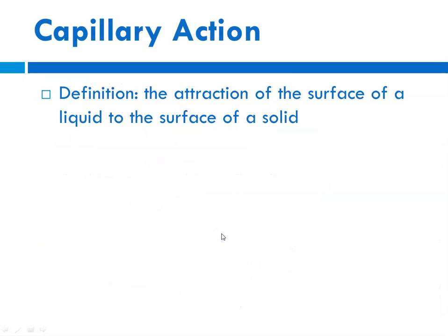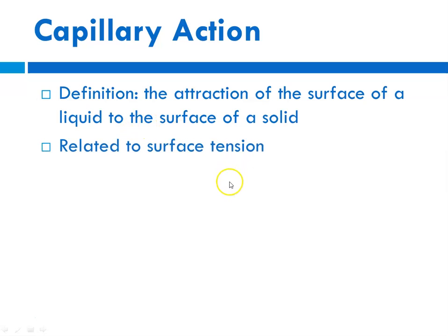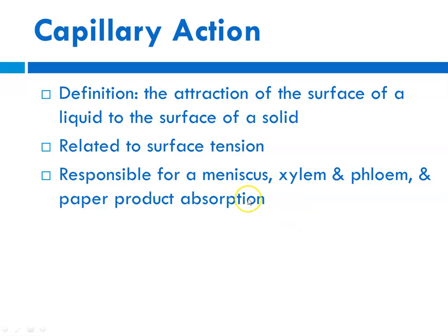Capillary action has a relationship to surface tension. By definition, it's the attraction of the surface of a liquid to the surface of a solid. It's responsible for the meniscus that we see when we put a liquid into a column like a graduated cylinder. It's also what causes water to flow in plants — in your xylem and your phloem — and also why paper products can absorb water.